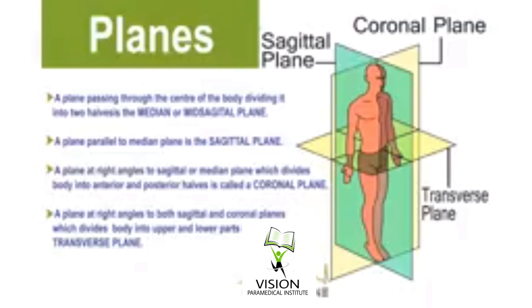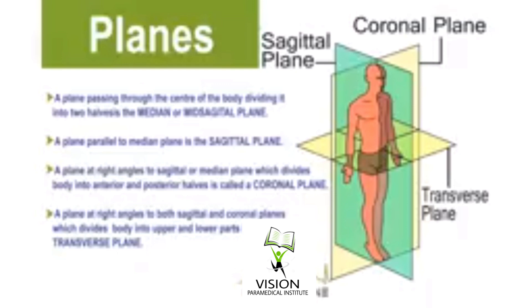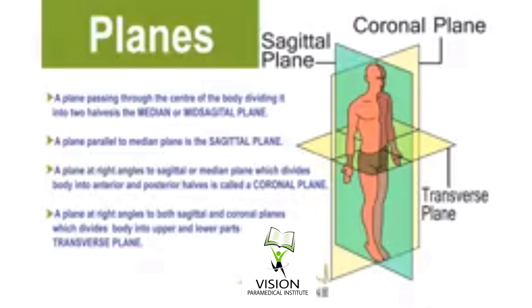The next one is the coronal plane. A plane at right angles to the sagittal or median plane, which divides the body into anterior and posterior halves, is called the coronal plane. The next and last plane is the transverse plane: a plane at right angles to both the sagittal and coronal planes, which divides the body into upper and lower parts. In the image, we can clearly see the sagittal plane, coronal plane, and transverse plane.